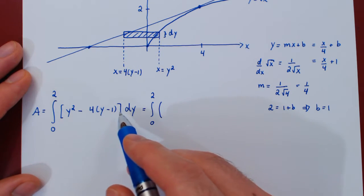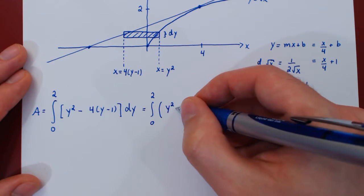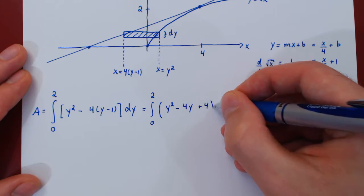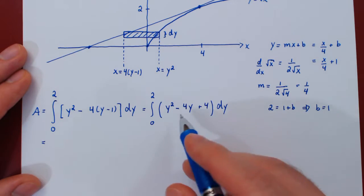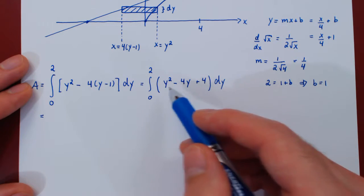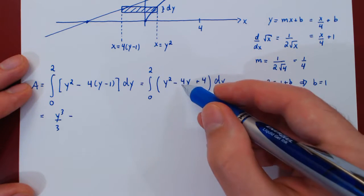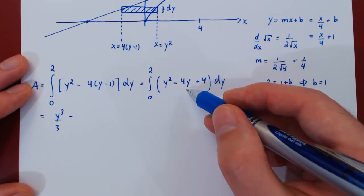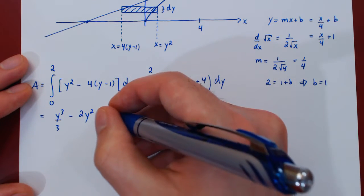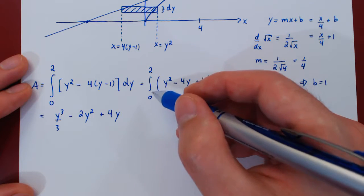Before evaluating, let's multiply across the negative 4 to apply the power rule. We get y squared minus 4y plus 4. By the fundamental theorem of calculus, we find the antiderivative: y cubed over 3, minus 2y squared, plus 4y. We evaluate this from 0 to 2.